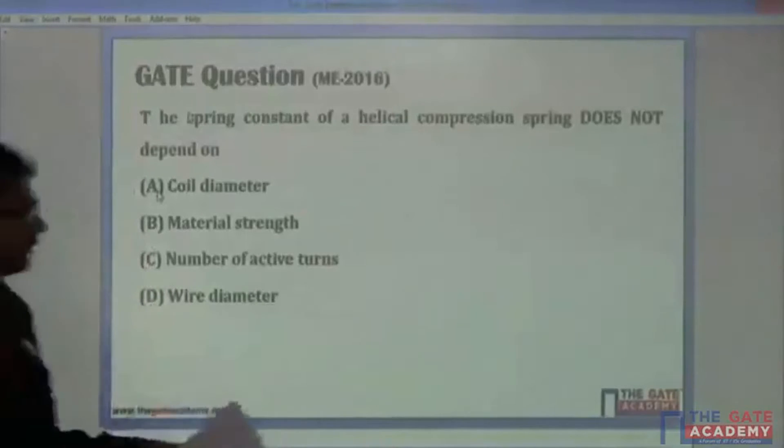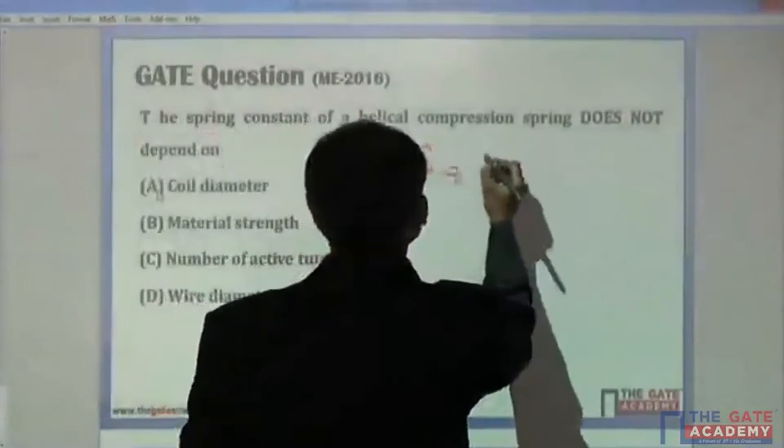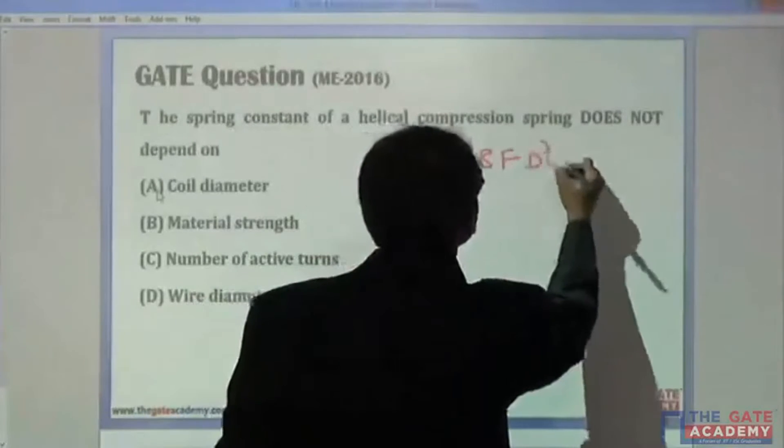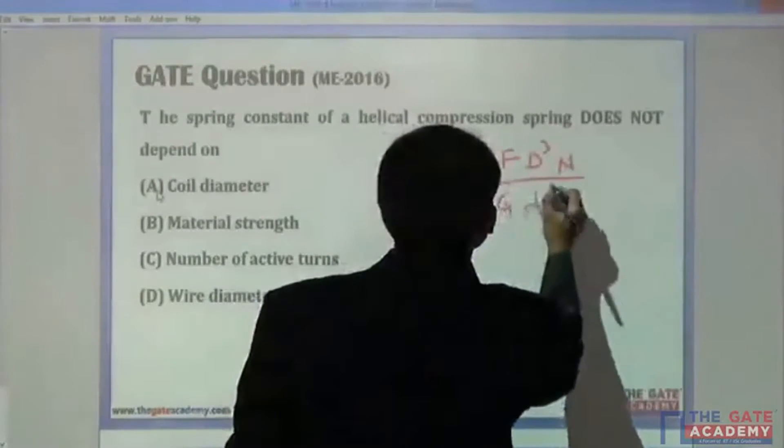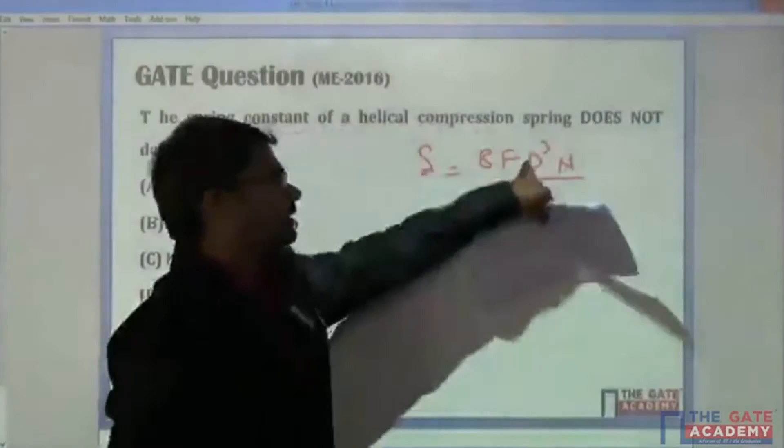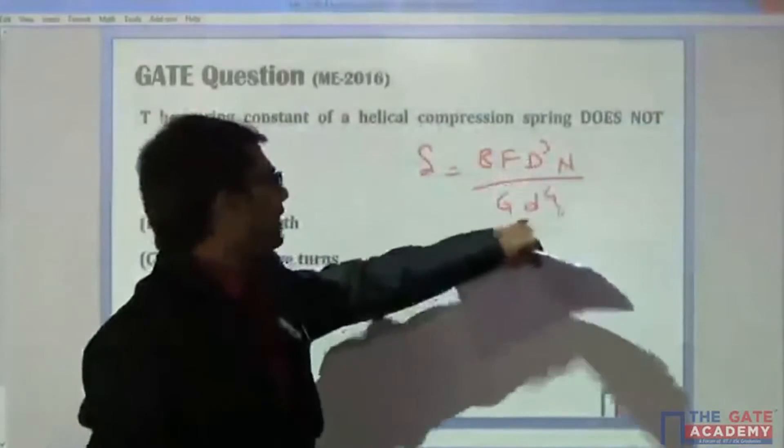We know the formula for deflection of a helical compression spring as delta is equal to 8FD³N by Gd⁴, where capital D is the coil diameter and small d is the wire diameter.